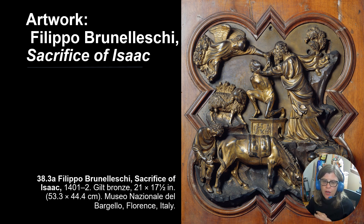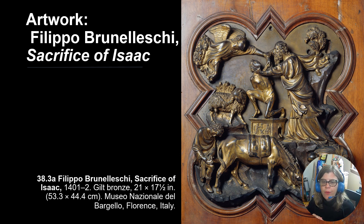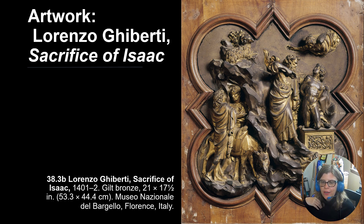The story everyone had to represent in their submission was the sacrifice of Isaac. Abraham is a biblical figure who did not have any children until he was very old, so Isaac was a very special child he treasured dearly. To test his loyalty, God asked him to sacrifice Isaac. Here we see Abraham up on the mountain with the altar and Isaac, about to sacrifice him. But the angel flies in and stops his hand, and the ram nearby was provided by God for the sacrifice rather than Isaac. In the second version, look how the angel is foreshortened in the way it's flying in, and again you have Abraham, Isaac, and the ram.